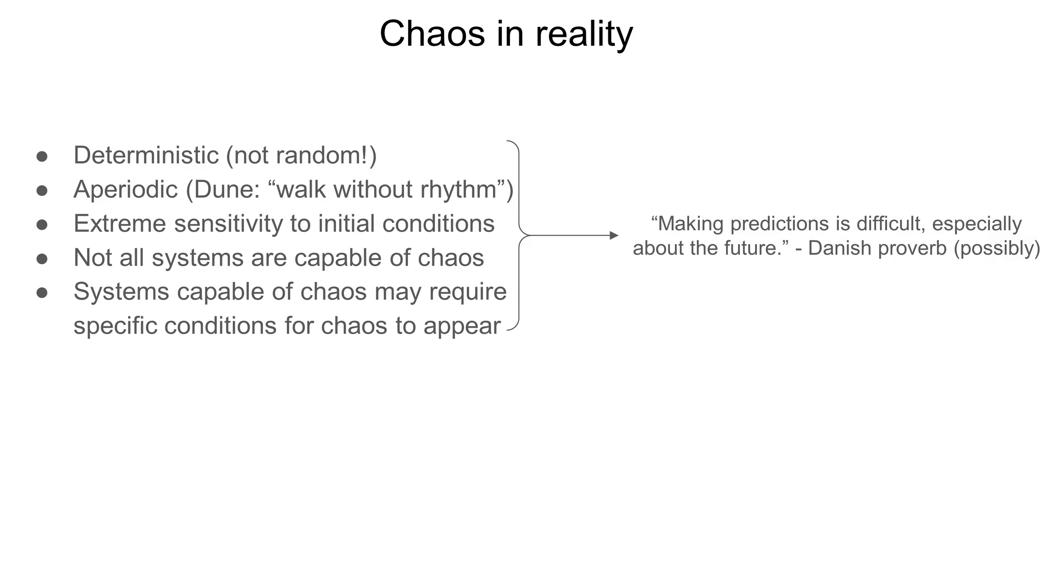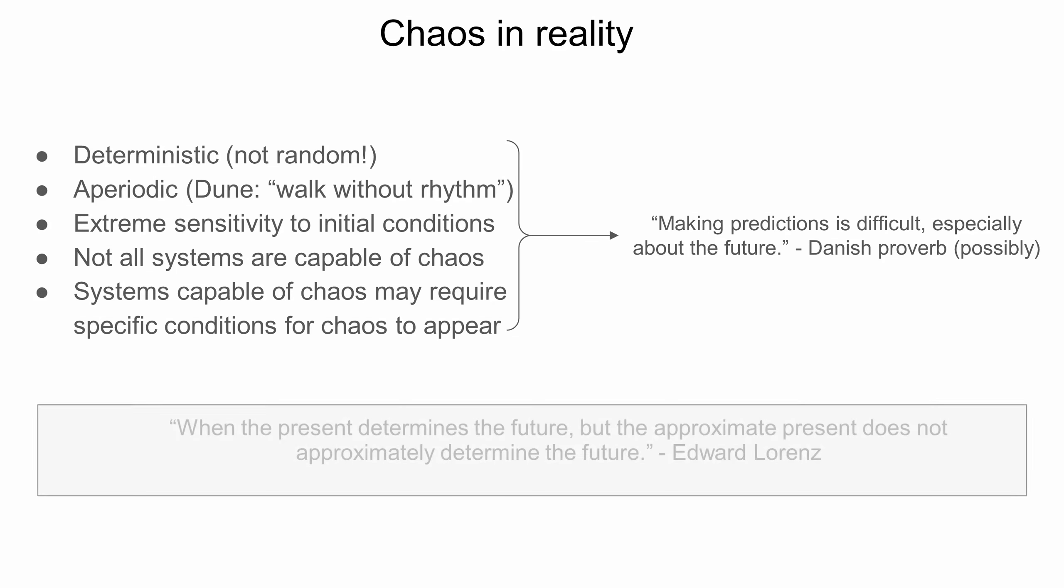There's a nice quote that applies to all of this. Making predictions is difficult, especially about the future. Said another way, chaos is when the present determines the future, but the approximate present does not approximately determine the future. The man who said that is Edward Lorenz, one of the early pioneers of chaos theory. We'll come back to him near the end of the video.